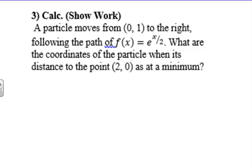What we're doing is we start - a particle moves from (0, 1) to the right. So if we want to graph this, we have an exponential function. We plug that in there. We have e^0, so (0, 1).